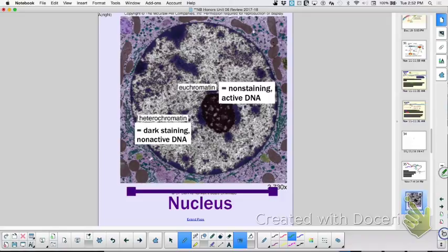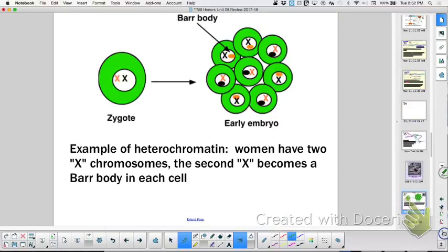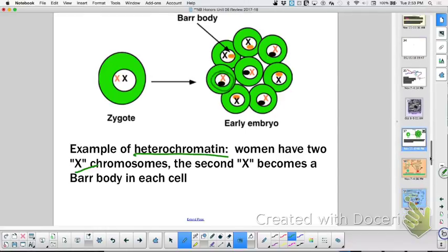This is comparing heterochromatin, this dark staining DNA, meaning it's put away, it's not active, compared to euchromatin, which is light, non-staining. It means it's getting transcribed. Know this - I think I asked a question about this. Heterochromatin is inactive, and remember we saw those were Barr bodies because females have two X chromosomes and one of them condenses. Only one X is active at a time.